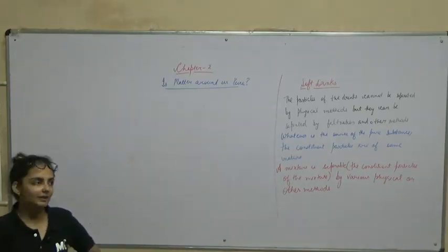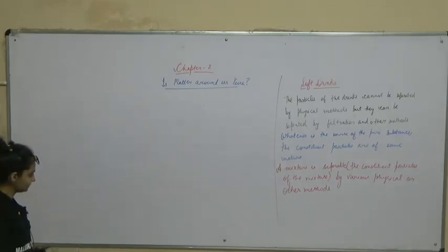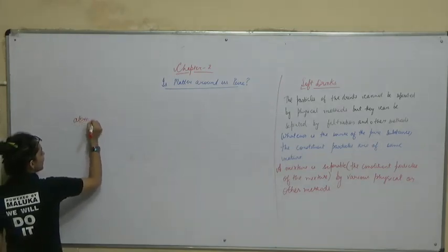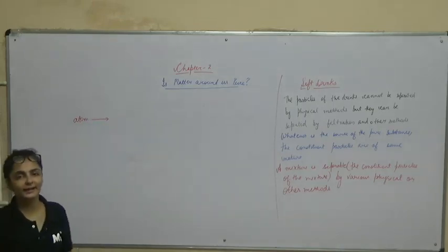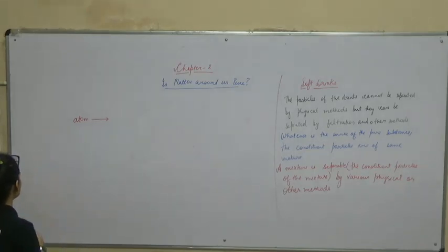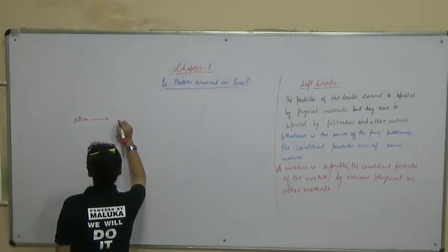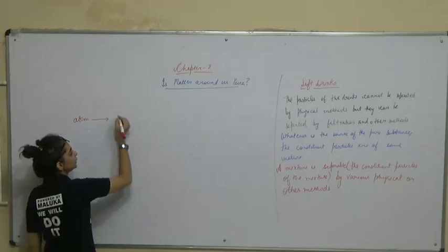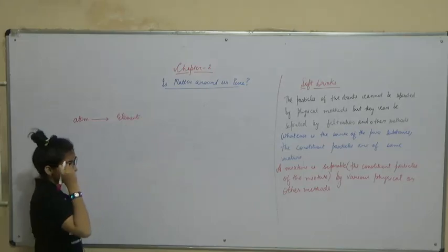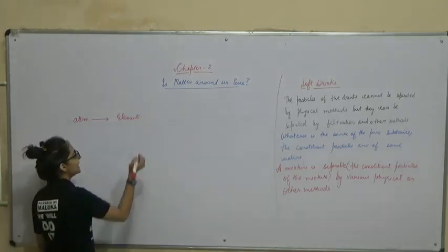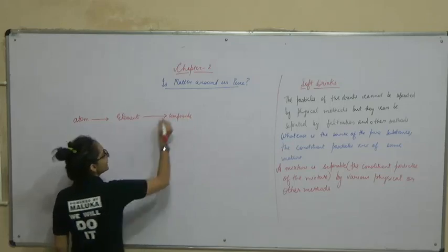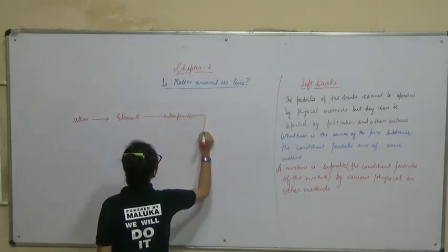Let us start from the atom. Atoms combine to form elements. Various elements combine to form compounds. Different types of elements fuse to form compounds. Various compounds or elements combine to form mixtures.